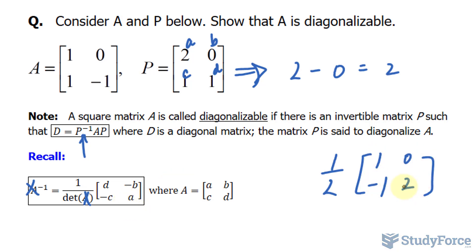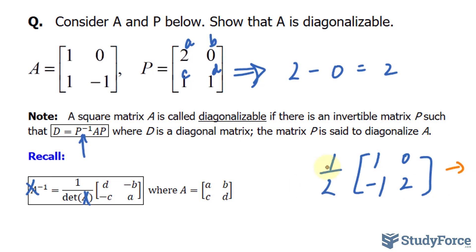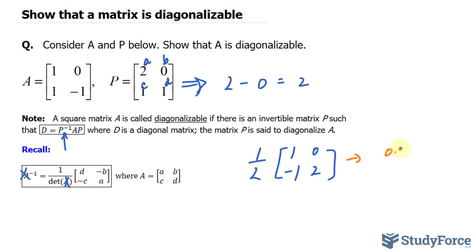We will now multiply each of these elements by the factor of half. We get 0.5, 0, negative 0.5, and 1. So this right here is the inverse of P.